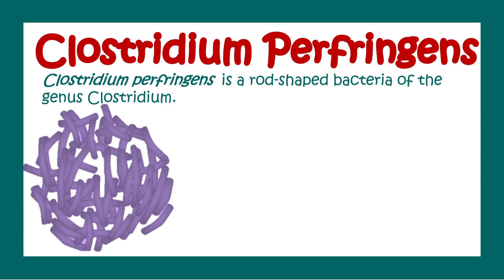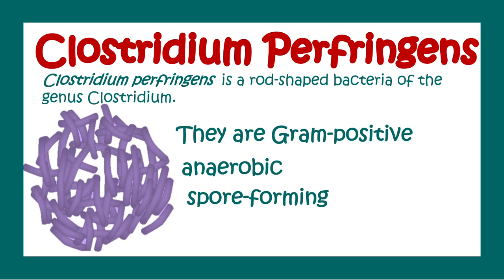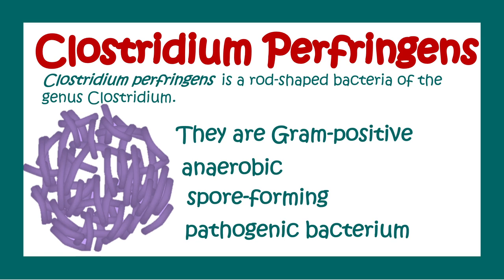In this video we'll talk about Clostridium perfringens. This is a rod-shaped bacteria of the genus Clostridium. They are gram-positive, anaerobic, spore-forming, pathogenic bacterium.